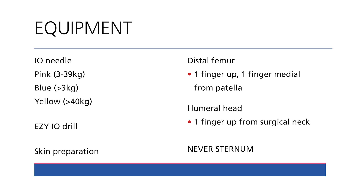There are limited investigations obtainable from IO access. Once your IO needle is in place, you can measure a blood sugar using a bedside glucometer and send a sample for blood culture. Most other laboratory tests are limited and will depend on the laboratory available to you.